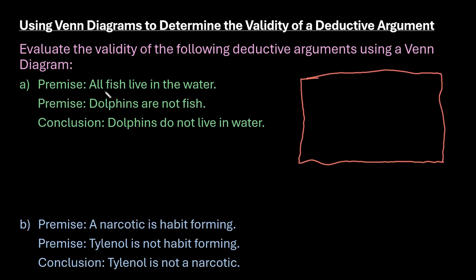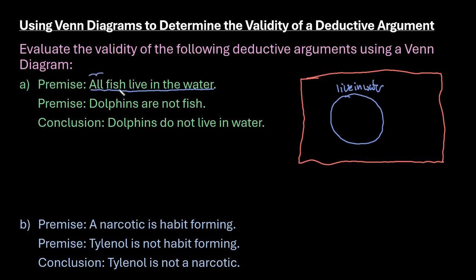Then we are going to draw circles to represent the first premise. In the first premise we have things that live in the water, and we know that all fish live in the water. So we're going to draw another circle inside of this to represent fish. Since it says 'all,' the entire circle will be contained in the other set — so this is the set of all fish inside of things that live in the water.